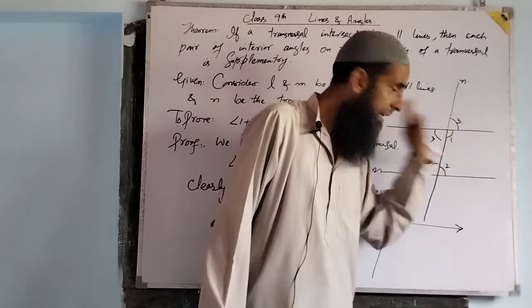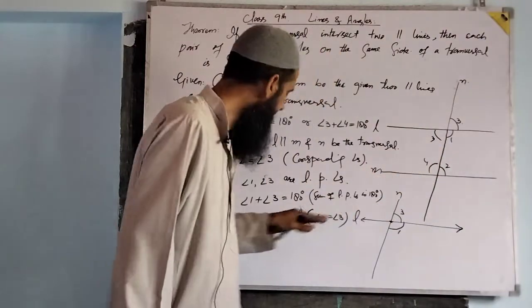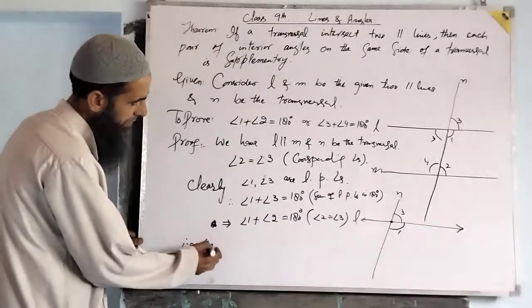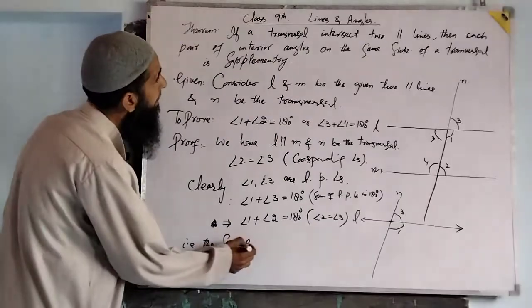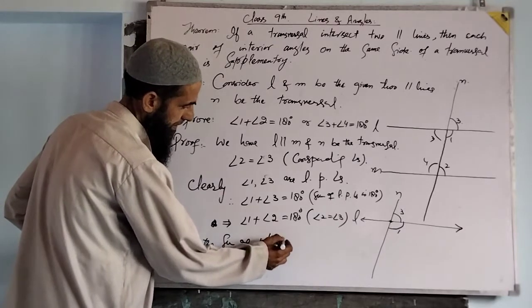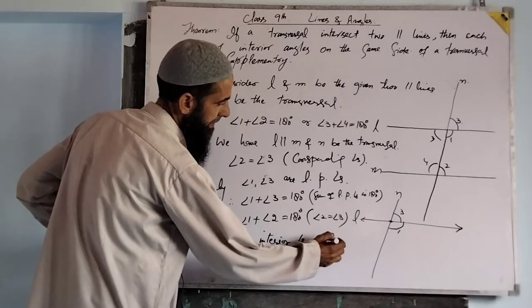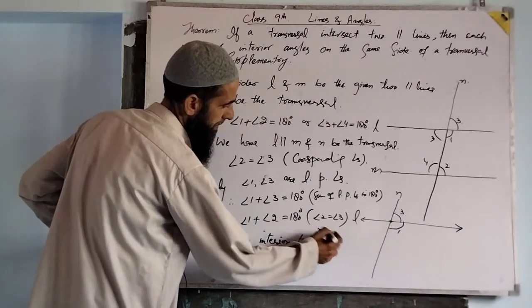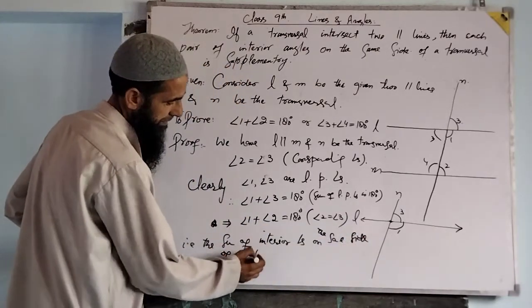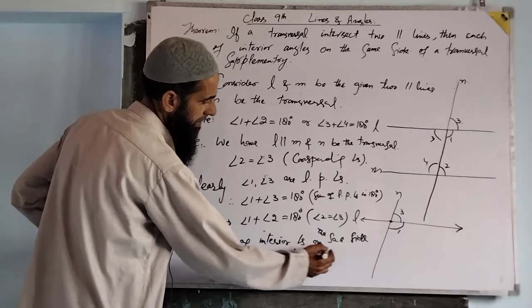These are the interior angles lying on the same side of the transversal. Similarly, we can show angle three plus angle four equals 180. That is, the sum of interior angles on the same side of a transversal is supplementary.